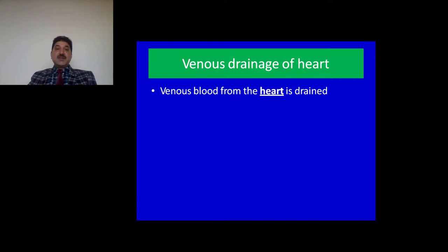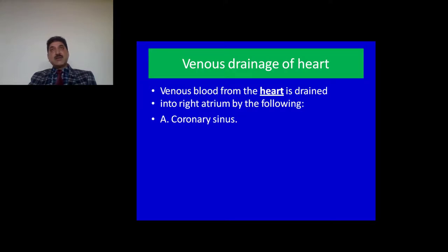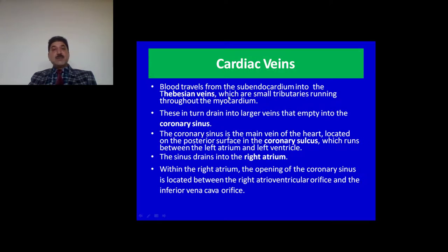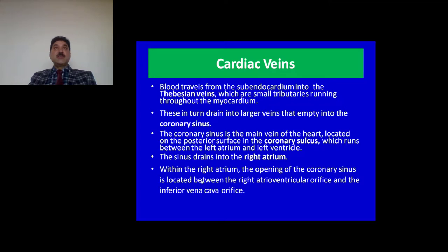What is venous drainage of the heart? Venous blood from the heart is drained into the right atrium by the following veins. The coronary sinus receives all veins of the heart except the anterior cardiac veins and venae cordis minimae. Anterior cardiac veins open directly into the right atrium. Venae cordis minimae, also called Thebesian veins, open into all four chambers of the heart but the majority open into the right atrium. The coronary sinus is the main vein of the heart, located on the posterior surface in the coronary sulcus running between the left atrium and left ventricle, and it drains into the right atrium. Within the right atrium, the opening of the coronary sinus lies between the opening of the tricuspid valve and the opening of the inferior vena cava. It is guarded by the Thebesian valve, which forms the boundary of the triangle of Koch, which contains the AV node and is important for ablation procedures and manipulation of pacemaker leads.